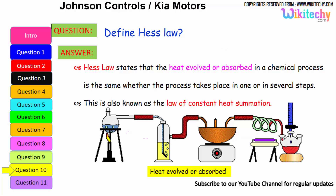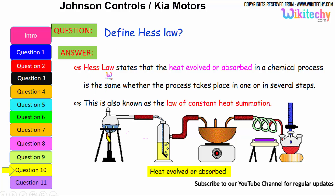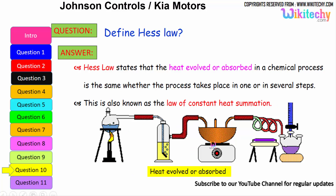Define Hess's Law. This is one of the very important questions. Hess's Law states that the heat evolved or absorbed in a chemical process is the same whether the process takes place in one step or in several steps. This is also known as the law of constant heat summation.